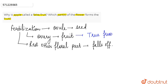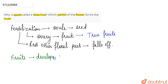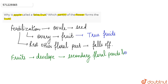But there are certain fruits that develop from other secondary floral parts — from some secondary floral parts — and not from the ovary. When fruits develop from secondary floral parts and not from the ovary,